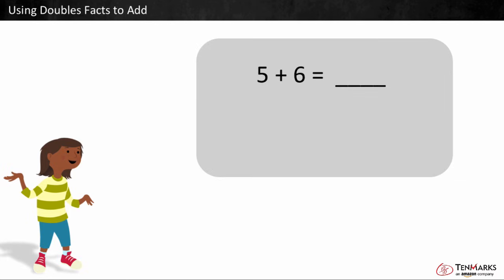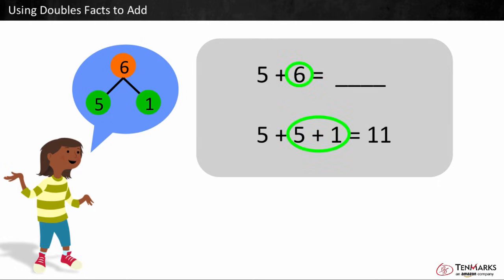Let's take a look at 5 plus 6. 6 is very close to 5. Since you already have a 5 as the first addend, just add 5 plus 5 since it's a simple doubles fact. Now you have 10. But you need to add one more to make it so you added 6 in all. 5 plus 5 plus 1 is equal to 11. So 5 plus 6 is equal to 11.